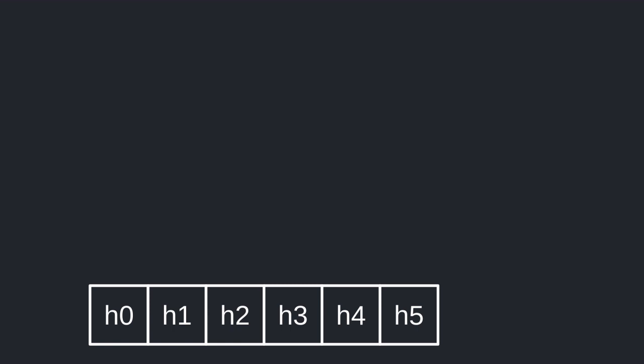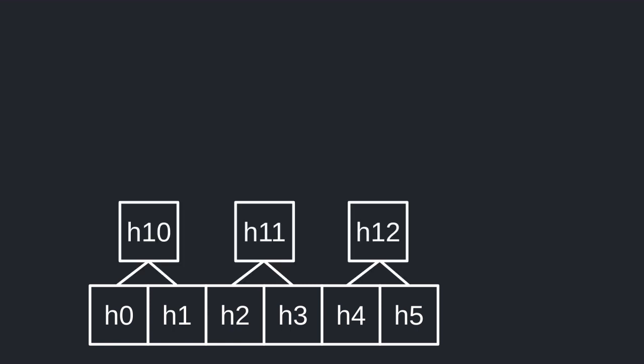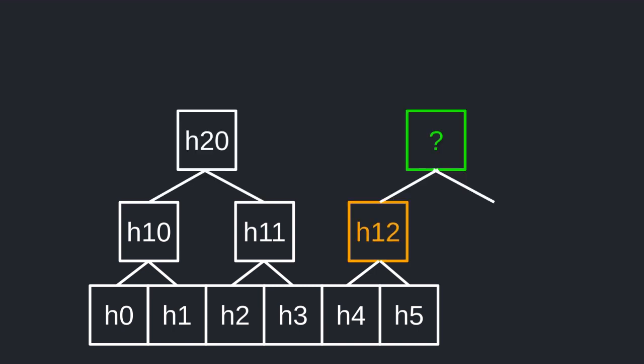Now if the number of elements in the original array is not a power of 2, then at some point during the Merkle tree construction there will be an odd number of computed hashes. For example, if you start out with six elements then you'll get three hashes after computing the hash of the pairs, and as you can see we cannot compute the next level of hashes since we need four hashes but there are only three.